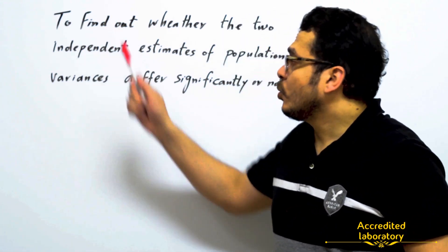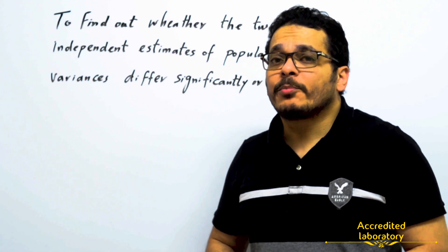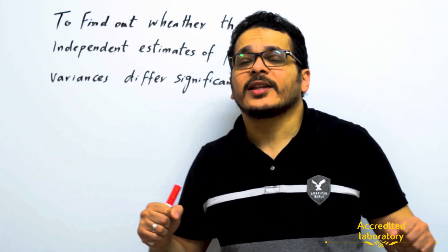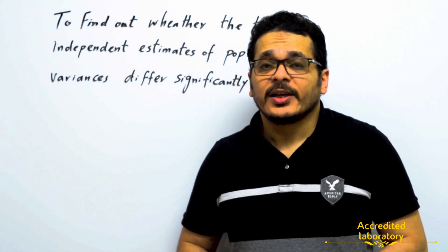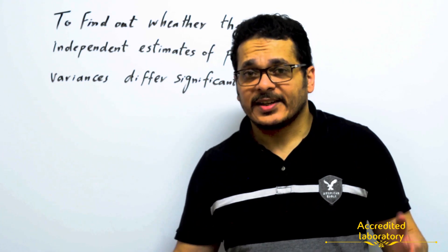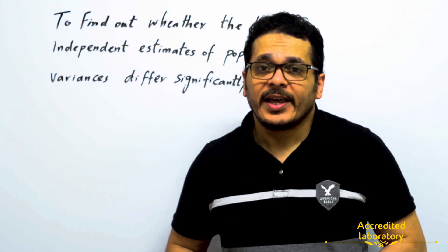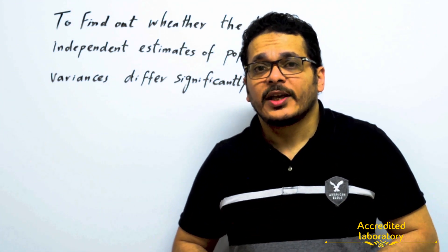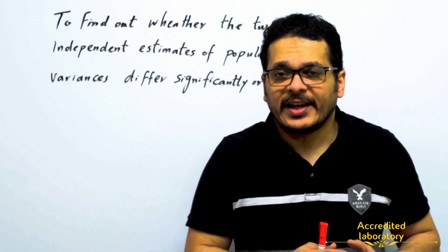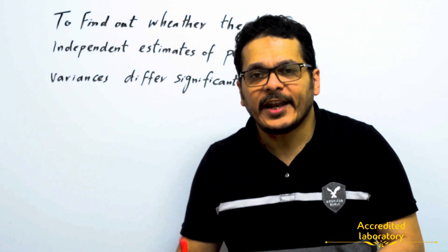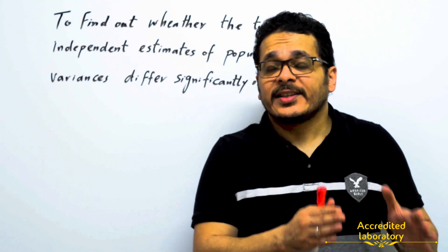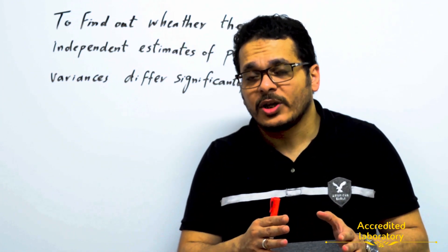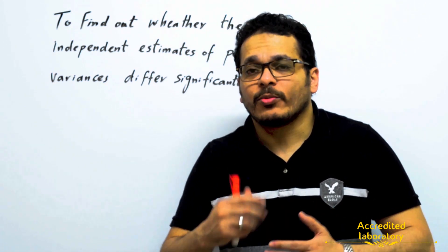In conclusion, F-test is used to find out whether two independent estimates of population variances differ significantly or not. This is done by analyzing replicates of spiked samples by two methods — one reference method and another developed and validated inside the lab. You calculate the variance from both methods, then calculate F-experimental and compare it with the F-critical value from the table. If F-experimental is lower than F-critical, there is no significant difference, and you can use the lab-developed method with confidence. If F-experimental is higher than F-critical, you cannot use this method and may need to redevelop it.